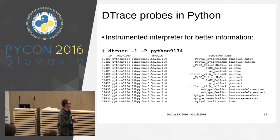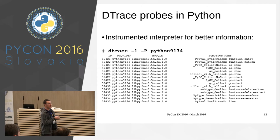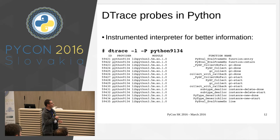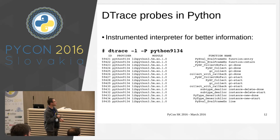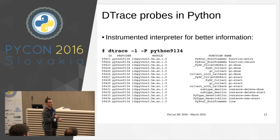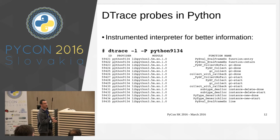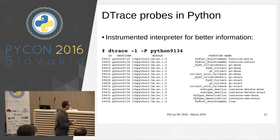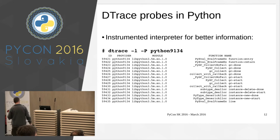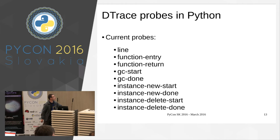Those are the probes. You have function entry and return — these probes are called every time you call a function or a method. Garbage collection start and finish, to monitor GC. The creation of objects. And every time you change a line in your source code, there's a trace. So with those probes, you can have very detailed insight into your running Python program.